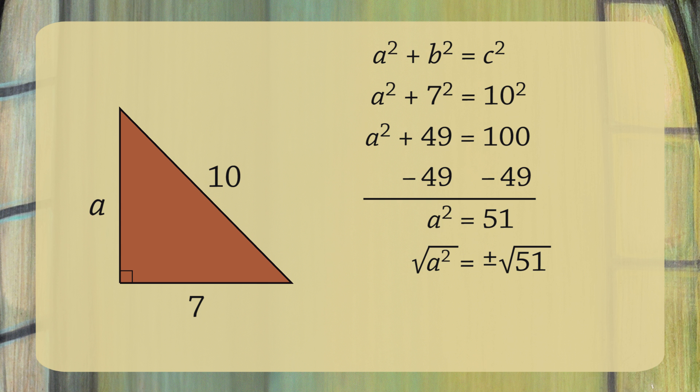Next, take the square root of both sides. This gives us A equals plus or minus the square root of 51. Since A is a length, it must be positive. So A equals the square root of 51.